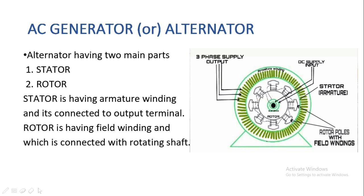The field winding is connected to a DC input supply. The rotor is connected to the rotating shaft — you can see the shaft at the center point — so when the shaft rotates, the rotor also rotates. We will now see how the alternator is functioning.